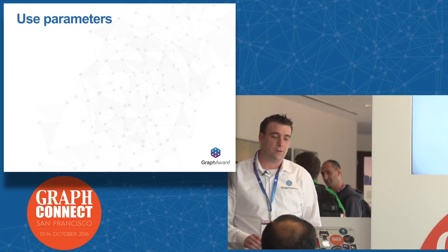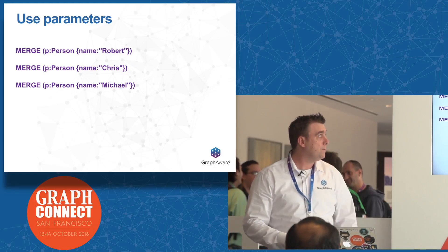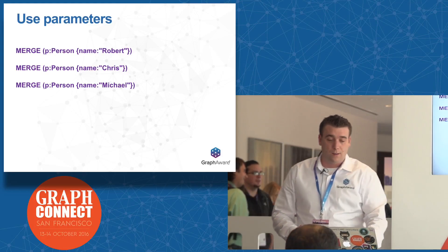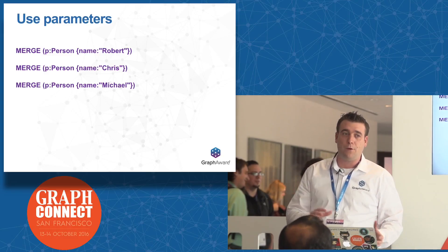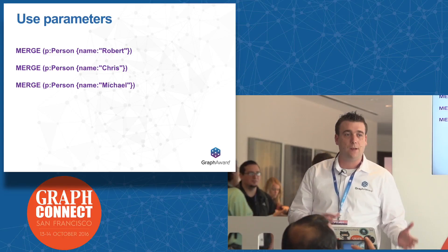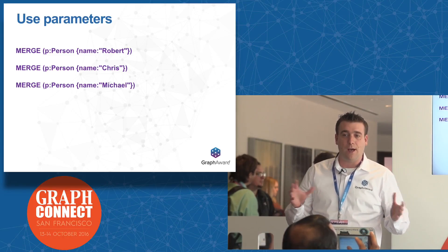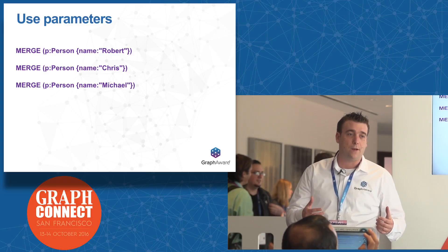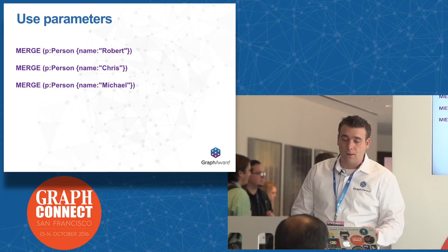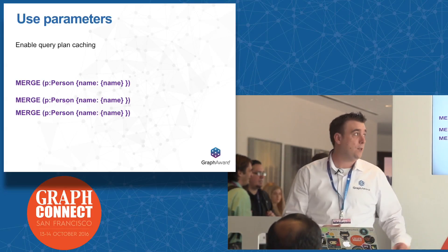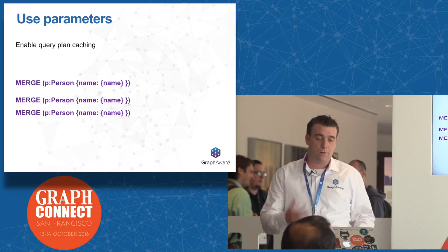The first tip is to use query parameters. If you take a query that creates three persons without parameters, Cypher can cache the query plans. If you use parameters, it will cache the query plan and reuse it the next time, making things really faster.